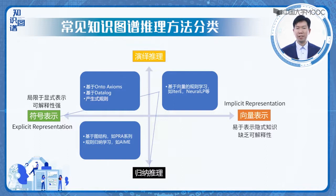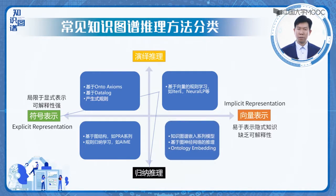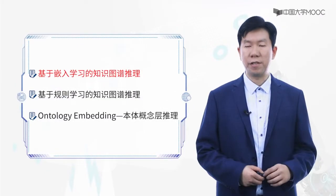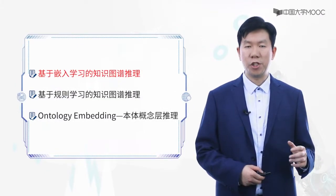传统的方法有利用图的结构特点进行统计归纳的PRA系列模型，和基于知识库中的Facts进行规则归纳学习的AMIE算法等等。随着深度学习的深入发展，基于表示学习和知识图谱嵌入的推理方法得到更多的重视。同时，既然知识图谱有图的结构特点，图神经网络方法也非常自然地被应用到知识图谱的推理和挖掘分析中。有关图神经网络的方法，我们将放到第八讲《图算法与图数据分析》中进行介绍。我们首先来介绍基于嵌入学习的知识图谱推理模型，即KG Embedding。知识图谱最关心的推理任务是关系推理。